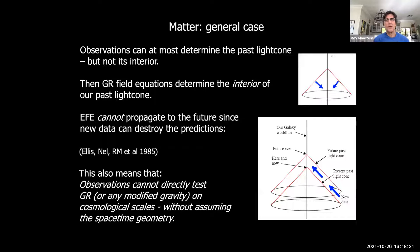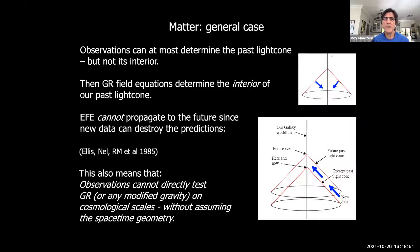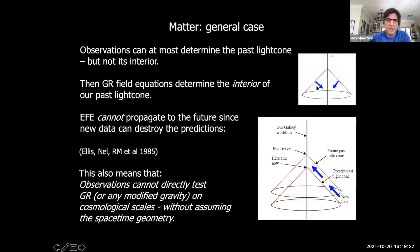What about matter? Observations on our past light cone can at most determine the geometry on the past light cone without field equations. Observations of galaxies — number counts, distances, and lensing — allow us to determine the geometry on the past light cone. In order to propagate that off the past light cone we require field equations. GR field equations propagate only to the interior of the past light cone; they cannot propagate to the future because new data coming in can leave no imprint on your past but can affect future predictions.